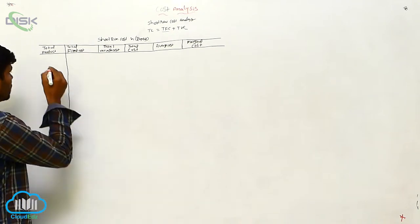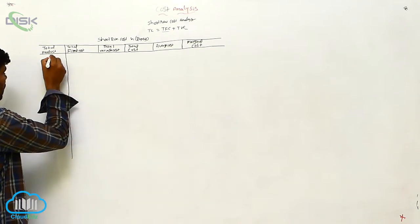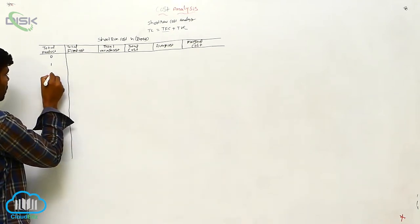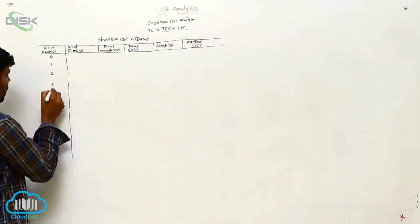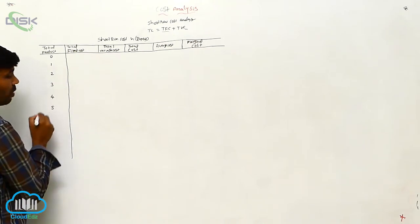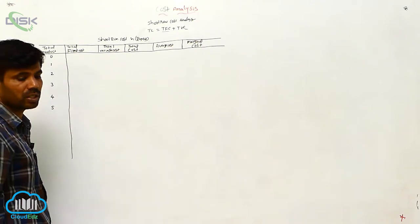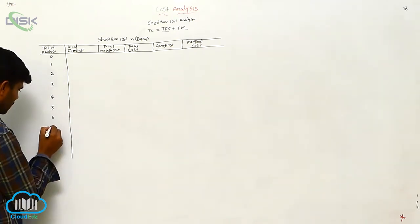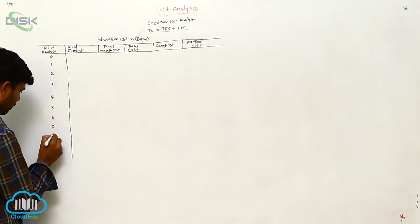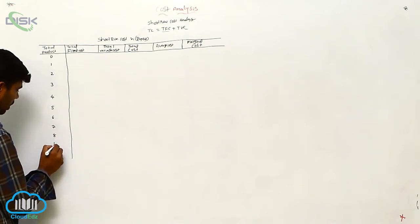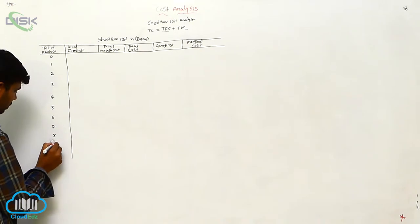We are going to consider 10 commodities for total product: 0, 1, 2, 3, 4, 5, 6, 7, 8, 9, 10.